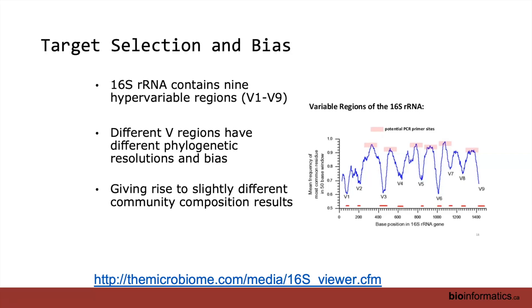There has been debate for a long time about which variable region to use. People have their favorites — anything around V4 is very popular, V5 as well, but people have also used V1-V3, V6, V8. Different variable regions will give you slightly different views, and the primers you use will also have certain biases. Different variable regions will also give slightly different taxonomic results, and if you compare a dataset done with one primer set to another dataset using different variable regions, they're not going to agree — the technical bias is huge.